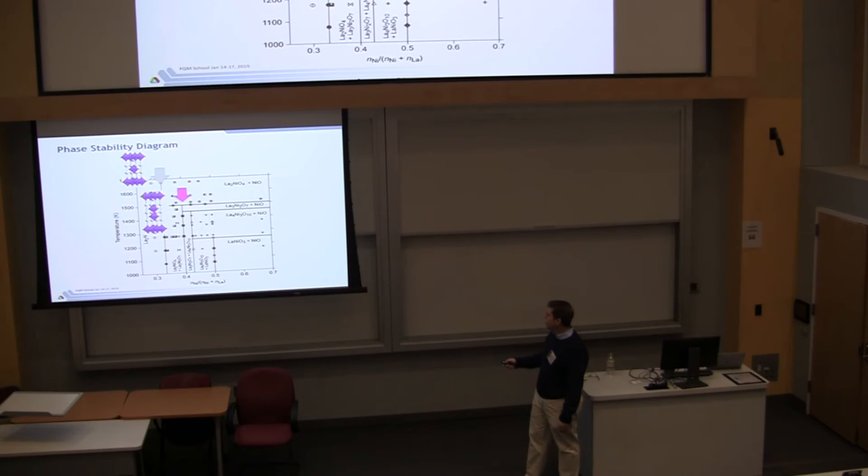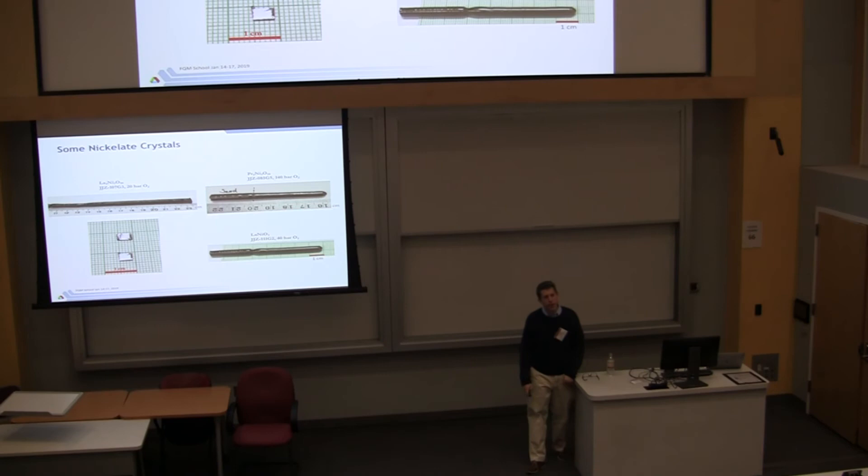And what you find is that in the case of lanthanum, this 214 material is stable at 1 bar, that's why everybody can grow it. But then you go to two layer, three layer, and perovskite with increasing pressure. And gratifyingly, the average oxidation state of the nickel increases as you go up in pressure and it makes perfect sense. So we found this sweet spot where we can grow the 4-3-10, and the 3-2-7, and the 1-1-3. If you go to praseodymium, it's a lot more difficult.